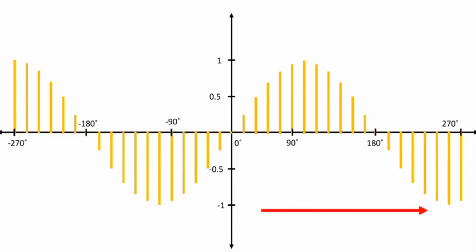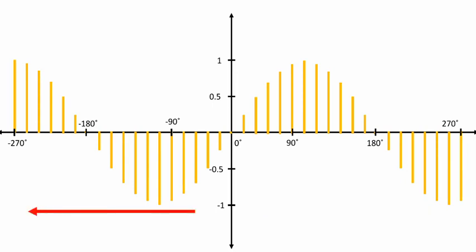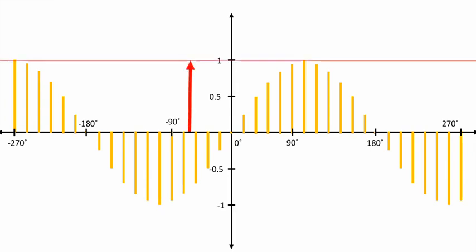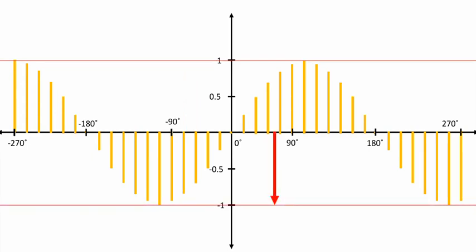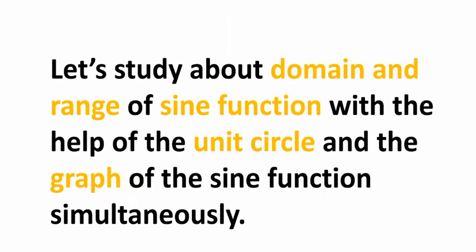The graph goes right and never stops — it approaches positive infinity towards the right. It also goes left and never stops — it approaches negative infinity towards the left. It goes upward to a maximum value of positive 1 and downward to a minimum value of negative 1. Now let's study the domain and range of the sine function using the unit circle and the graph simultaneously.